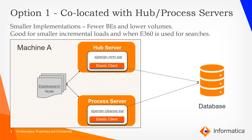However, if you decide to use this approach for production, this would only be ideal for an implementation that has fewer BEs and extremely low volumes. It could support smaller incremental loads when E360 is just used for searches. Since the hub and process servers and the Elasticsearch node are sitting on the same physical machine, we call this a co-located installation.